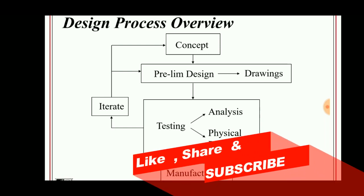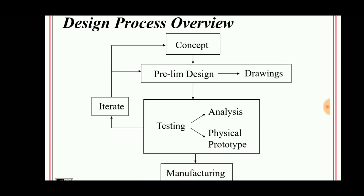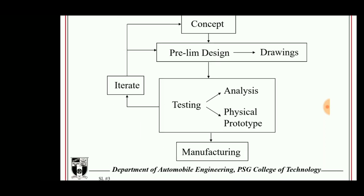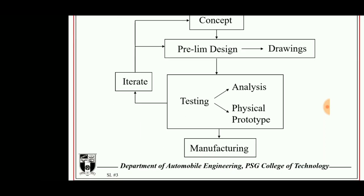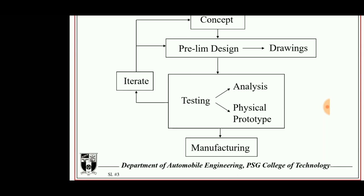Correct diagrams with accurate dimensions are then drawn, and a model is developed using software on which analysis is performed. A physical prototype model is then prepared and tested to get optimum results, after which it can be manufactured. If the design is not satisfactory, the process is repeated.